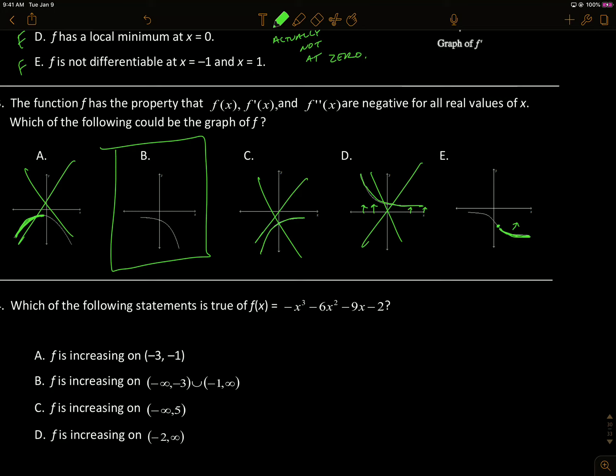It's partially concave upward, which means f double prime would have to be positive at some points. And it shouldn't be. It says that f double prime should always be negative.